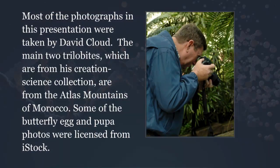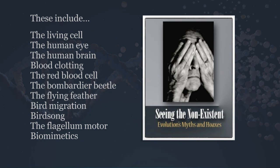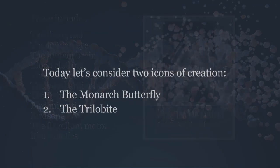We're going to look today at icons of creation — evidence for the creator from his creation. Most of the photographs in this presentation were taken by Brother Cloud. We're going to look at two trilobites from his collection taken from the Atlas Mountains of Morocco. We're really just looking at two out of 35 icons of creation in his book. Other icons include the living cell, the human eye, the human brain, blood clotting, the red blood cell, the bombardier beetle, the flying feather, bird migration, bird song, the flagellum motor — which you have in every one of your cells — and biomimetics. All of that's available in the book, but today we're going to look at just two.